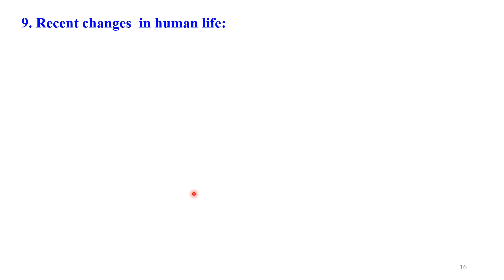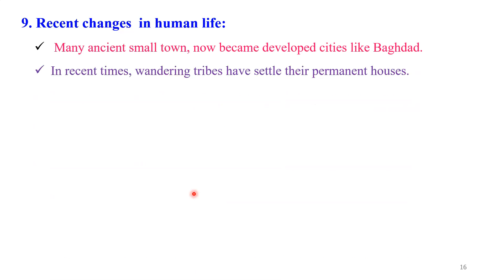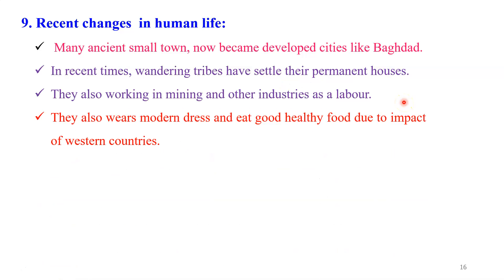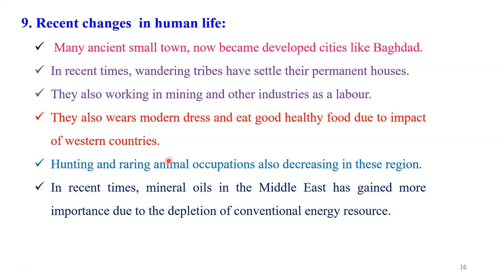Dear students, let us see the latest changes we observe in human life in the desert region. Many Asian small towns have now become developed cities, like Baghdad. In recent times, wandering tribal people have settled in permanent houses. They also work in mining and other industries as labor. Therefore, they are not continuously moving from place to place. Now their life has become permanent at some places. They also wear modern dress like us and eat good, healthy food due to the impact of western countries. This life is really changing day by day.